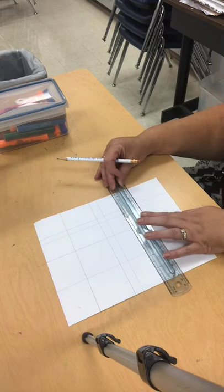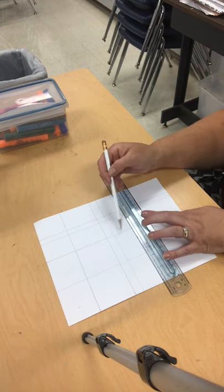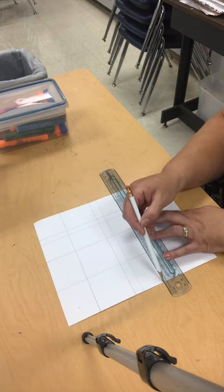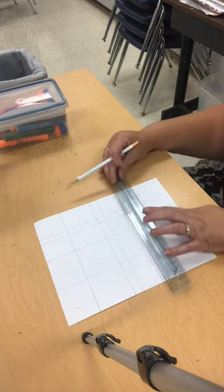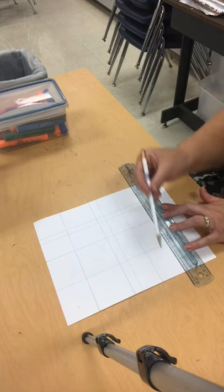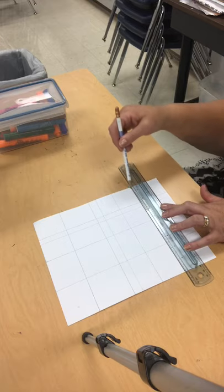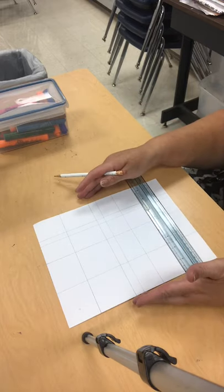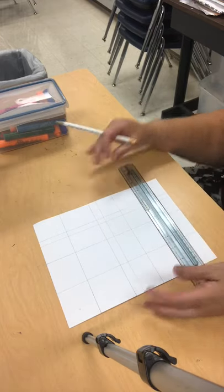I'm going to go really small this time because I want to show a variety of rectangles and squares. Now I'm going to go a little bit further. So this time I'm going to create a square right here. And you can make as many lines as you want as long as you've got rectangles and squares. And you go from one side of your paper to the other side of your paper.